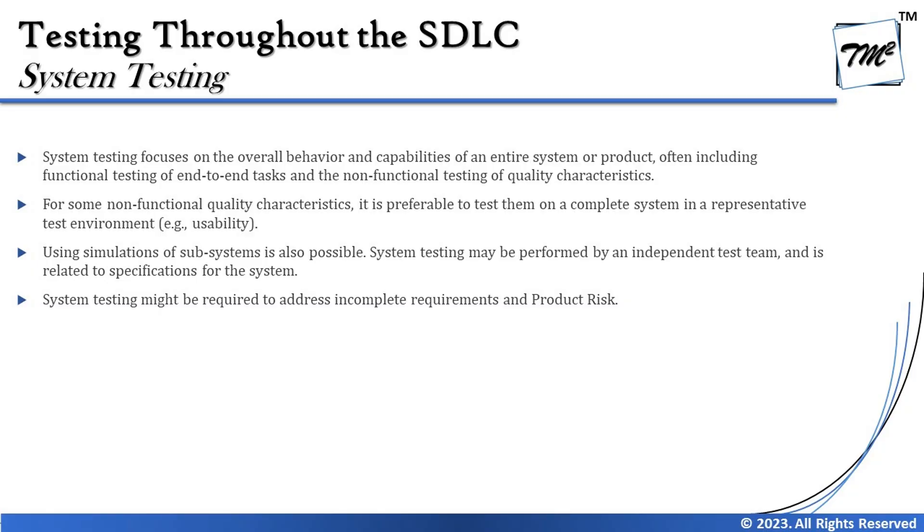Using simulations of subsystems is also possible in system testing. System testing may be performed by an independent test team. Component testing is generally owned by the development team; integration testing can be done by developers or testers; and system testing may require a different team altogether. This highlights that different levels of independence can exist between test levels within functional testing.